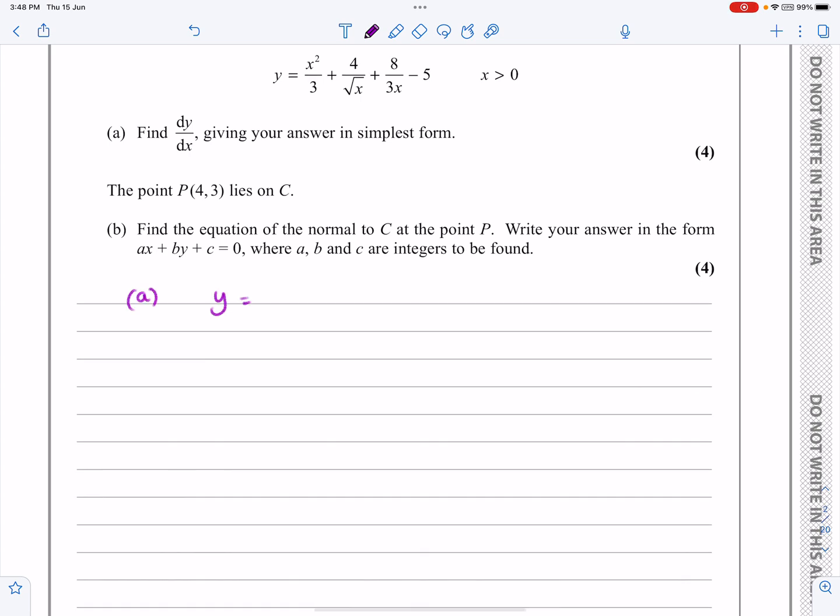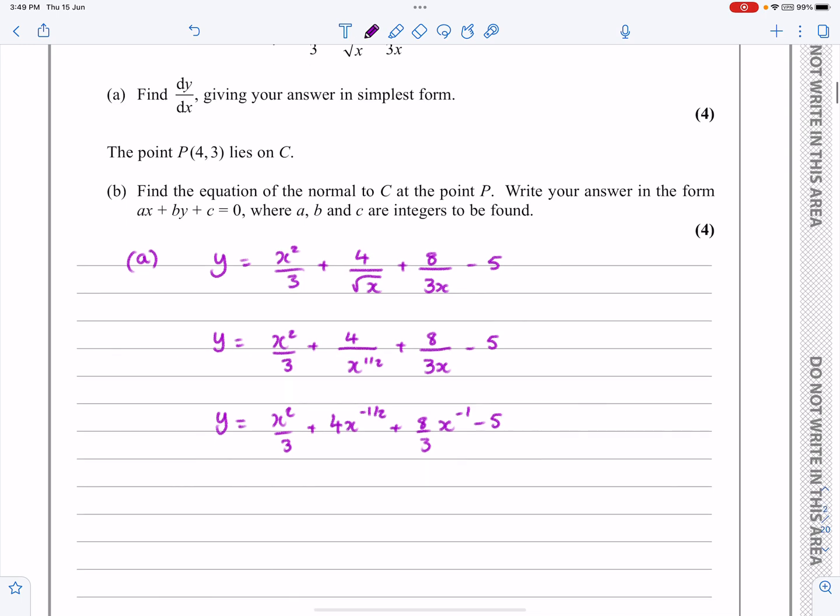So, it says that y is equal to x squared over 3 plus 4 over root x. I'll need to change that. Plus 8 over 3x, I'll need to change that as well. Minus 5. So, let's just tidy this up so that it's something that I can differentiate. x squared over 3 is no problem. 4 over root x, I can call that 4 over x to the half. 8 over 3x minus 5. And then both of these, we can call those negative powers. We're going to get y equals x squared over 3 plus 4x to the minus a half plus 8 over 3x to the minus 1 minus 5.